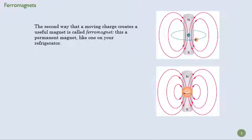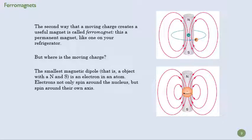The second way that a moving charge creates a useful magnet is called a ferromagnet, and this is what you're used to calling a magnet, right? The thing you stick on your refrigerator or the red and white toy. A ferromagnet is just a piece of iron. So you're thinking, what the heck? Where is my moving charge? We know with an electromagnet, yeah, there's the current. That's a bunch of moving charge. Where's the moving charge here?